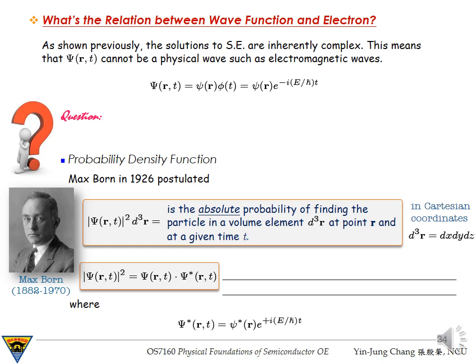The total wave function is shown to take the form as given here, where the small case ψ(r) is a function of position only, and φ(t) will always be in the form of exponential minus iωt, where ω is equal to the total energy of a particle, capital E, divided by the reduced Planck constant ℏ.